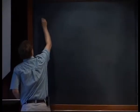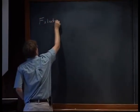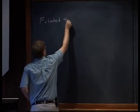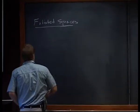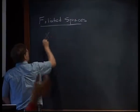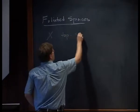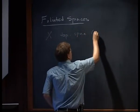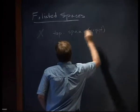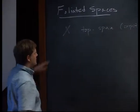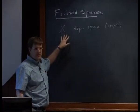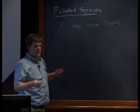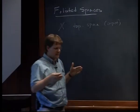Let me introduce what foliations are — foliated spaces. Here we have a space X, a topological space, and we'll assume it's compact. Usually when we say foliations, it's a manifold. Some people call this a laminated space, but that is confusing because low-dimensional topologists use it in a very narrow sense.